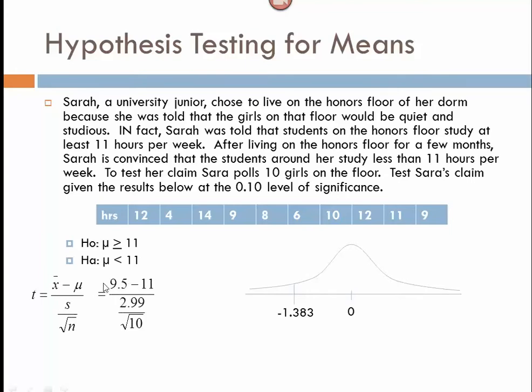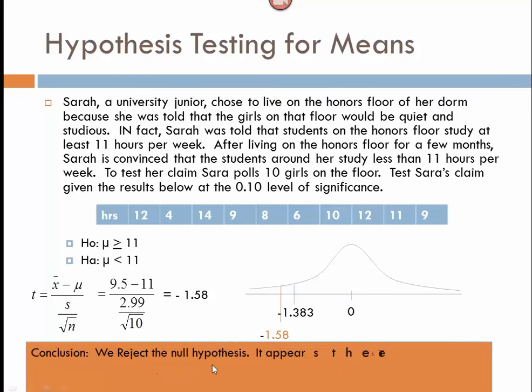You should get 9.5 as the average of these hours spent studying here, which does appear to be less than 11, but is it significantly less than 11 is the question. And negative 1.58 is the result of that. That's what you should get, which means it falls over here. This means that this sample she collected was extreme enough. It was beyond the level of significance we set in this case, and so our conclusion is to reject the null hypothesis. It appears that there is enough evidence to suggest that the girls on her floor indeed study less than 11 hours per week.